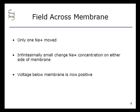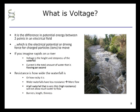Voltage is the difference in potential energy between two points in an electric field. This is also called the electric potential, or driving force on charged particles such as ions, that impels them to move. If you imagine a rapids on a river, voltage is the height and steepness of the waterfall. Current is the total water flowing per second past a given point, and resistance is how wide or how rocky the waterfall is. Wider waterfalls have less resistance, leading to more fluid flow. A tall, very thin waterfall — with high resistance — will not allow much water to flow.